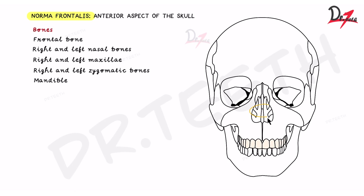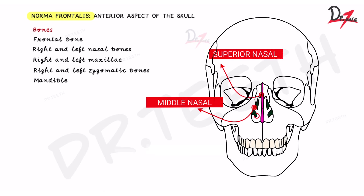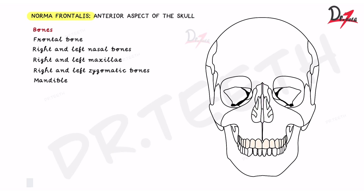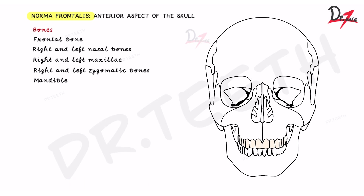Then we have the anterior nasal aperture — the opening for the nose. Just above it you will find the external nose. Within this aperture there is a separation in the center known as the nasal septum. We also have a few conchae: the superior nasal concha and below it the inferior nasal concha.